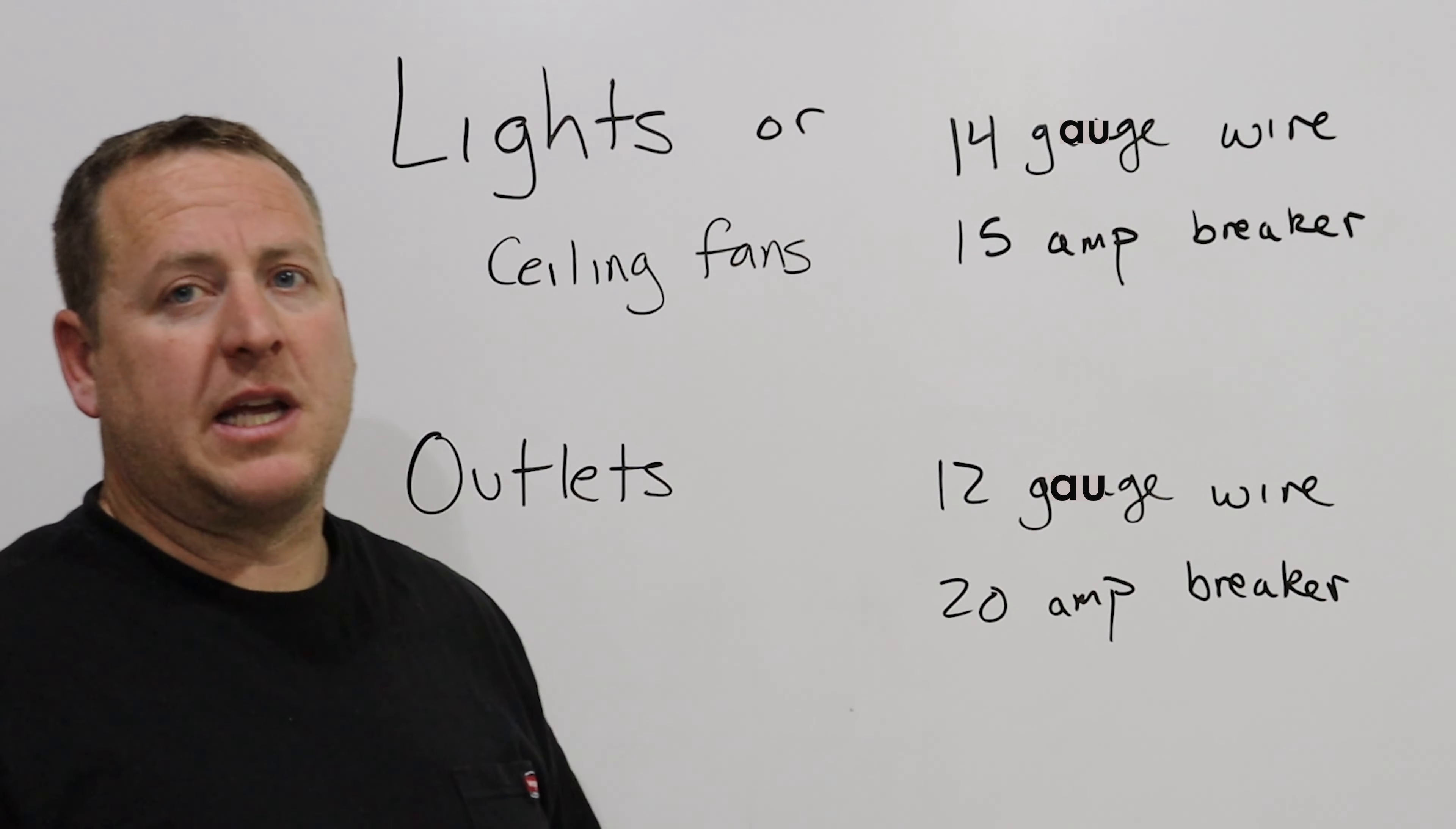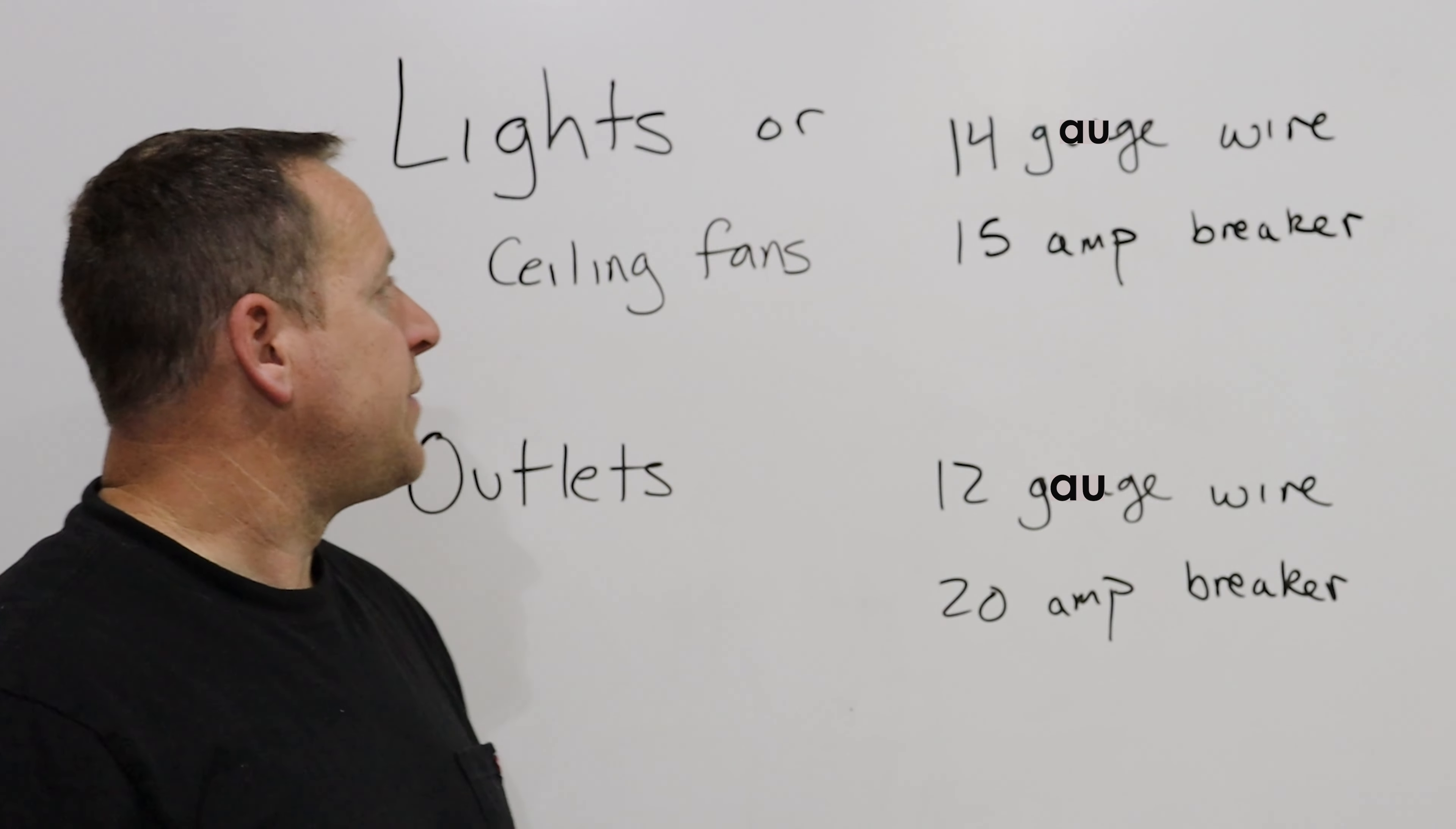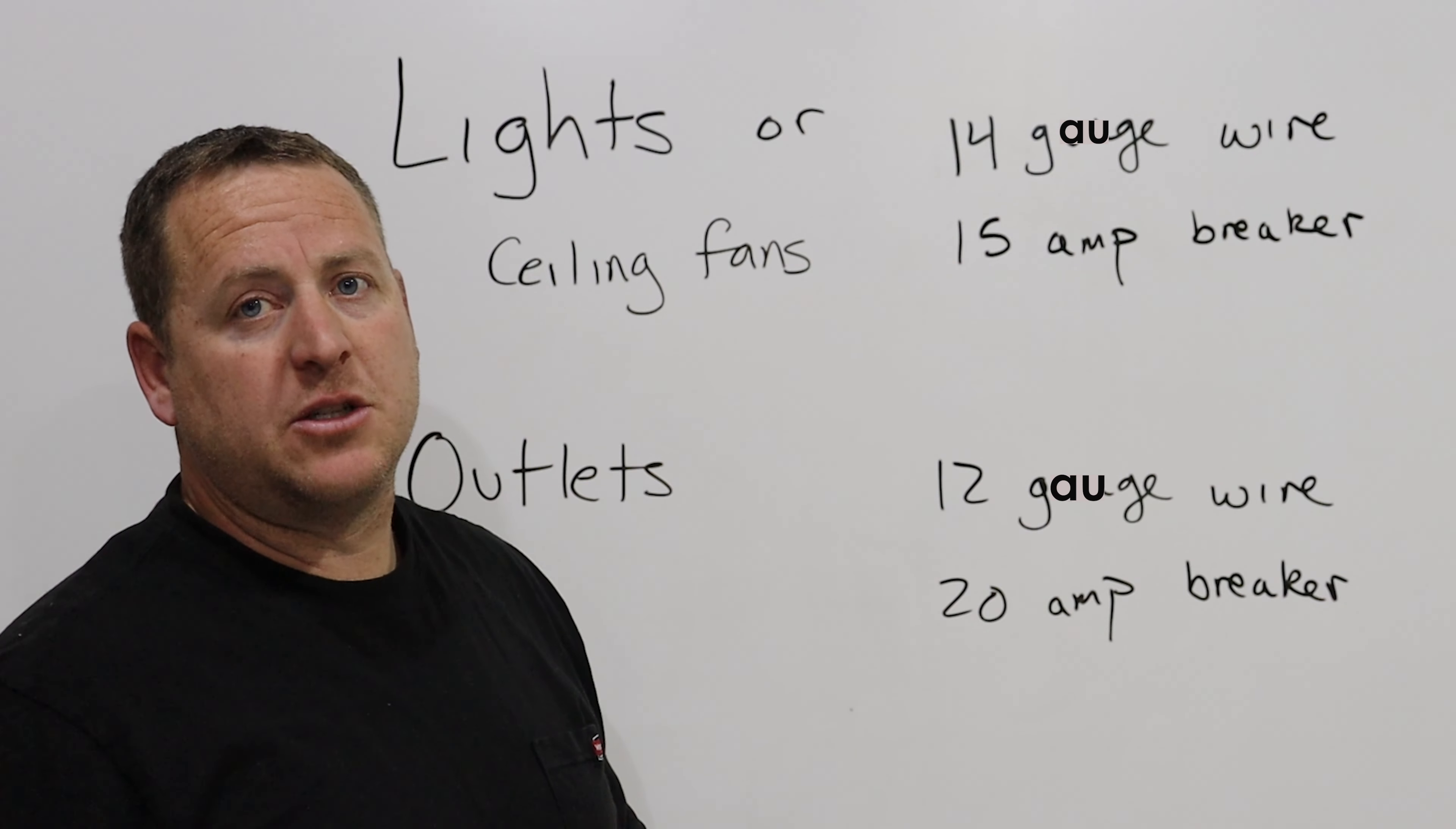This is my recommendation for homeowners. If you have a typical home with nothing like a shop or commercial application, then for lights or a ceiling fan, use 14 gauge wire, which is this white jacketed Romex, and use a 15 amp breaker with 14 gauge wire.